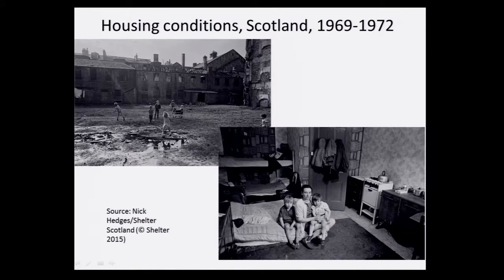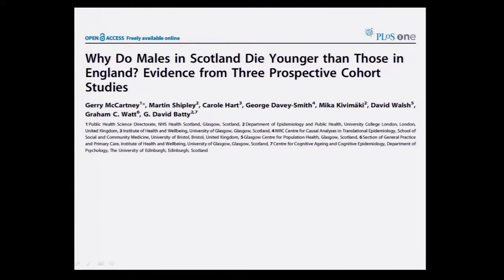What we know is there are stark differences in deprivation between England and Scotland. These are images of housing conditions around the late 60s and early 70s. But it's also quite interestingly evident that these differentials in poverty — in socioeconomic status, as we like to call it — don't actually explain these differences in mortality rates. The data I just showed you took those into account. So if it's not the most obvious one of socioeconomic position, what could it be?